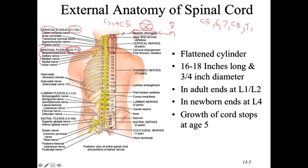In the lower back, the lumbar plexus is L1, L2, L3, L4. Below it, L4 to S4 is the sacral plexus — where the infamous sciatic nerve comes from. The sciatic nerve is the largest, thickest nerve in the human body and is made up of two nerves: the common peroneal nerve and the tibial nerve.